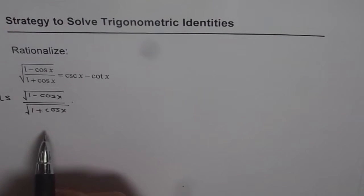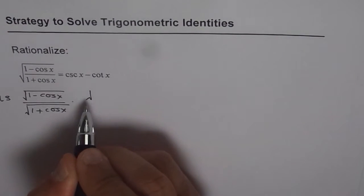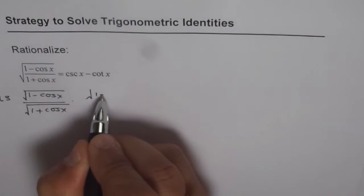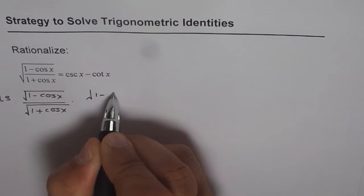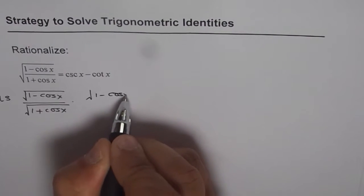That is what it means. So we will do that. Both numerator and denominator will be multiplied and divided by 1 minus cos x.